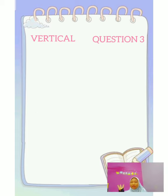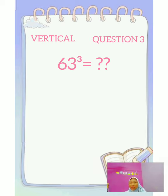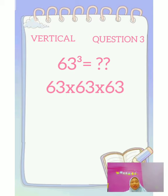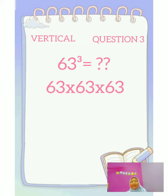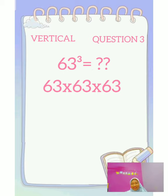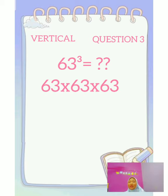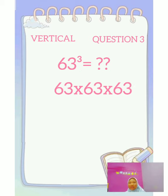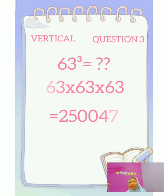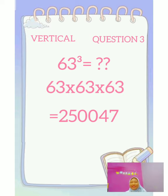Let's go. Next, vertical part, question number three: 16.3 to the power of 3 is equal to what? Because the keyword is 'power of 3', we must multiply the number by itself three times — 16.3 × 16.3 × 16.3. So the answer is 250,047.